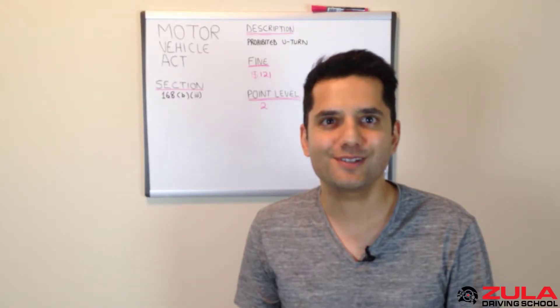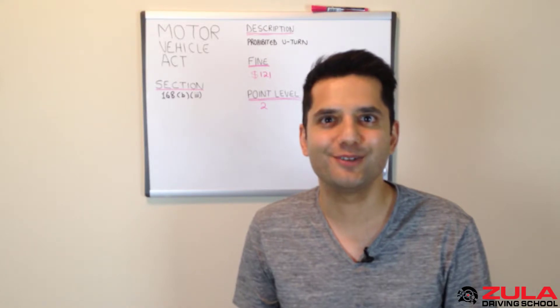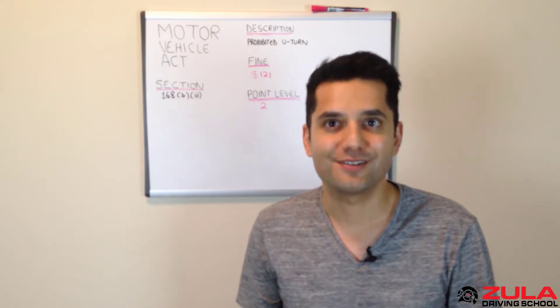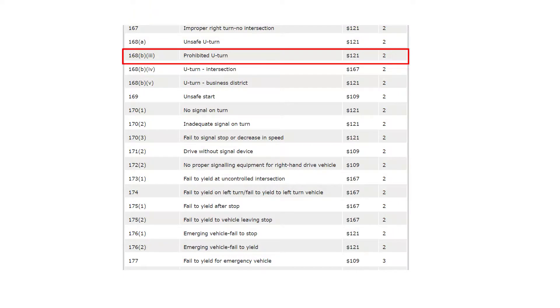So what does this mean in layman's terms? Don't perform a U-turn maneuver at a place where there's a sign telling you you can't. Failure to abide by this section of the Motor Vehicle Act can land you a $121 ticket with two driver penalty points.